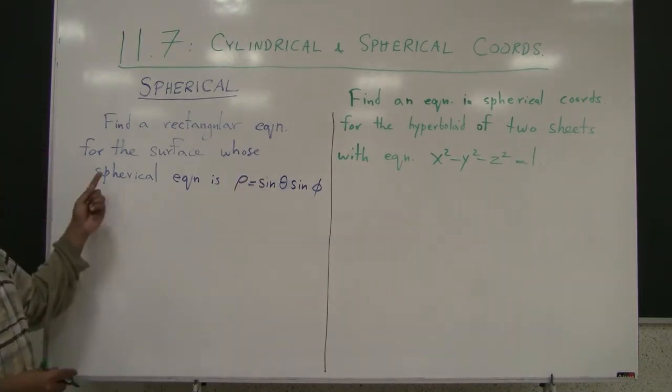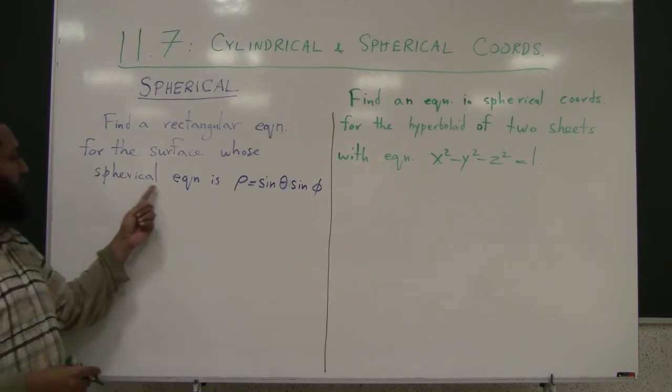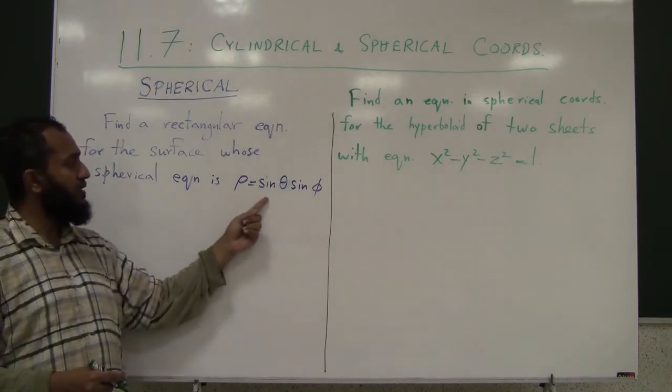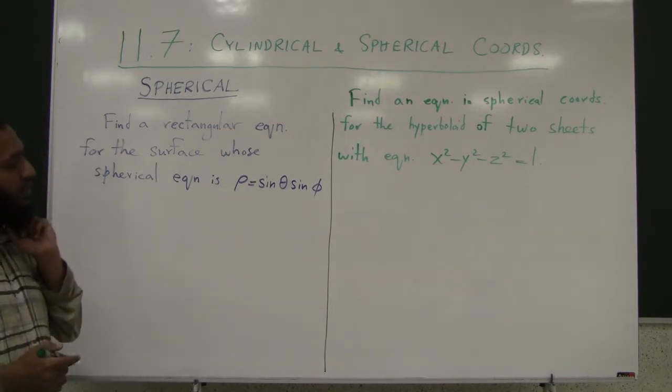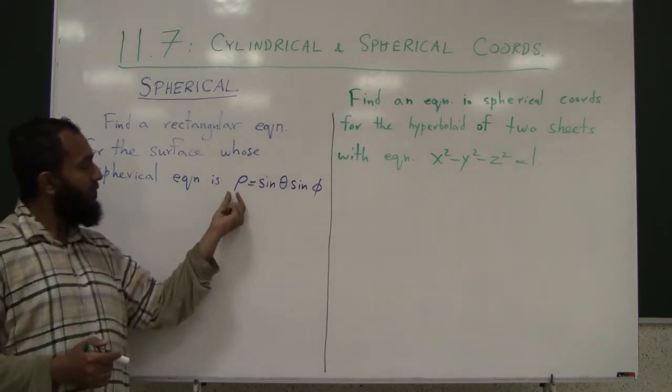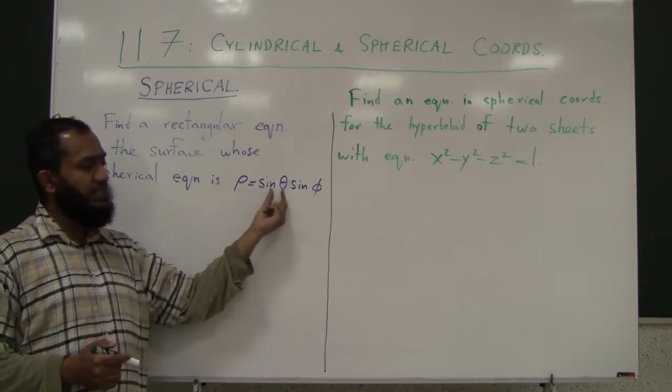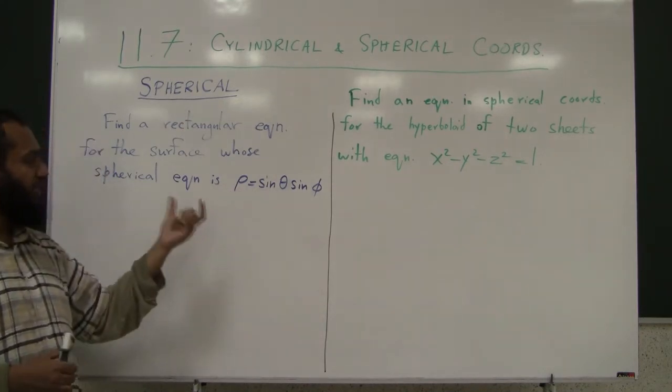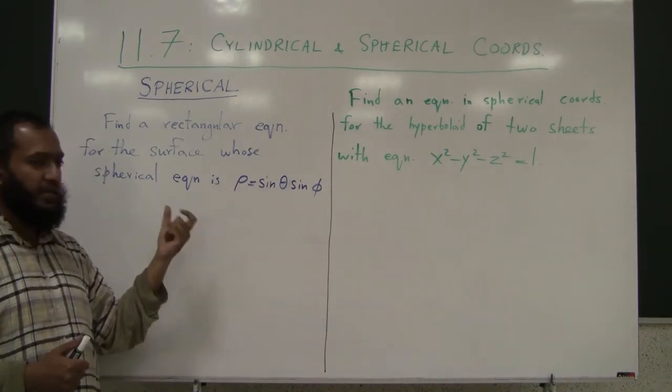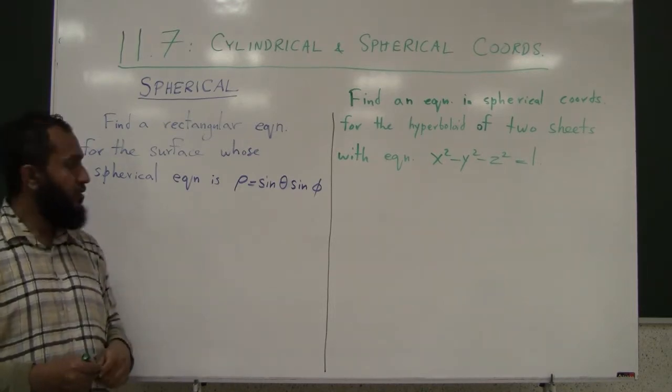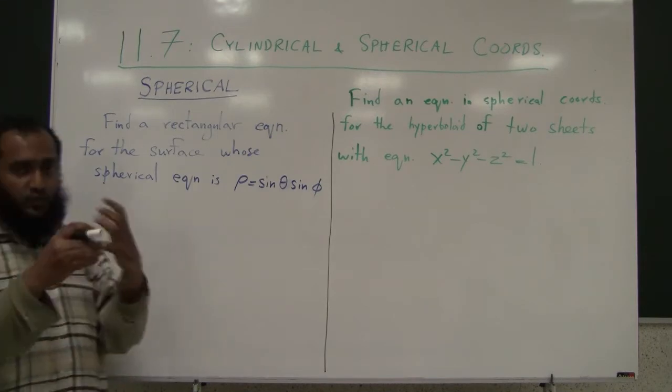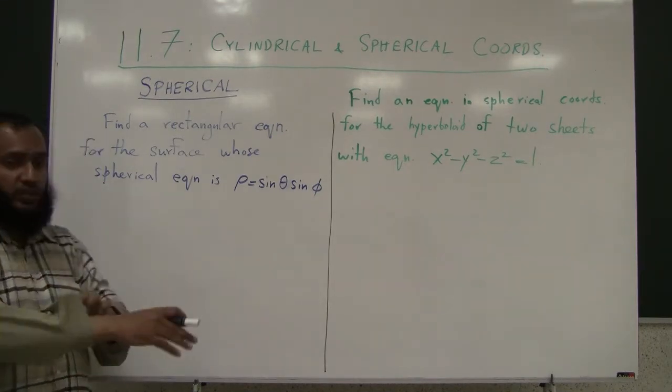Let's consider this equation: find a rectangular equation for the surface whose spherical equation is given as ρ equals sin(θ)sin(φ). Now, if you look at what the meanings of the quantity ρ, θ, φ, it may not be very obvious for us right now to extract what kind of surface this is. So what are we going to do? We need to try to relate this, we need to convert this to x, y, z.